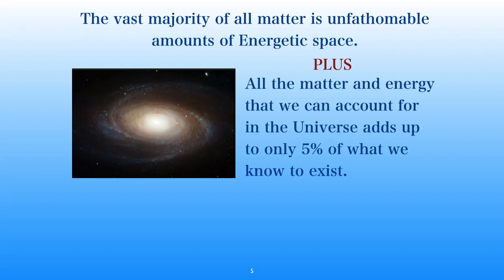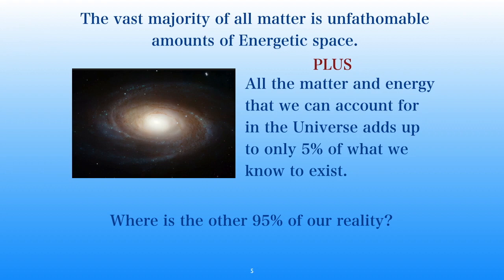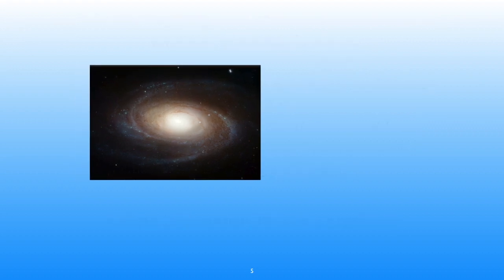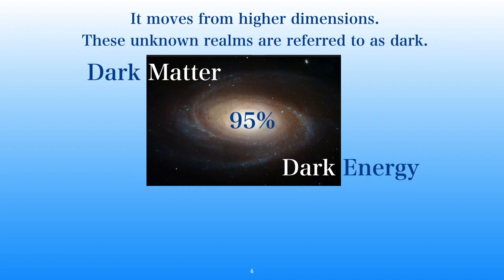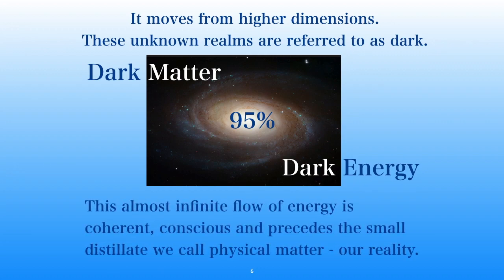And yet there's more. Science is looking at the fact that all the matter and energy we can account for in this universe — everything we do see, that 0.00001% — still that's only 5% of what we know to exist. So the question is, where is that other 95% of our reality? It moves from higher dimensions, and these unknown realms are referred to as dark matter and dark energy. That's 95% of what exists is what we can't see. It's a dark matter, dark energy universe.